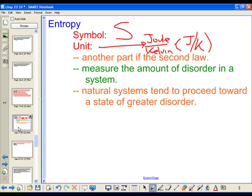Now entropy is another part of the second law. It's another part of the second law. And its symbol is a capital S. Our unit is the joule per kelvin. In other words, J per K. And it's the amount of disorder in a system. How much disorder? Well, it's the measurement of disorder.